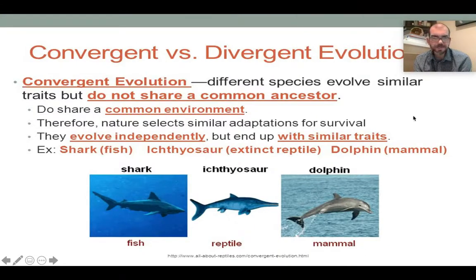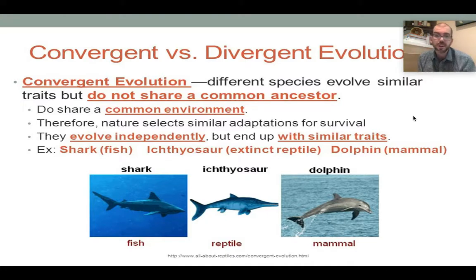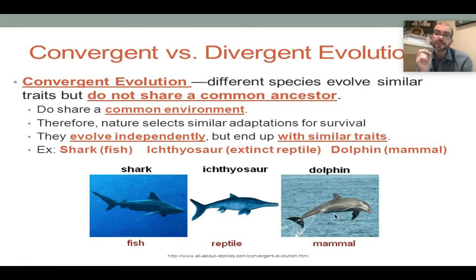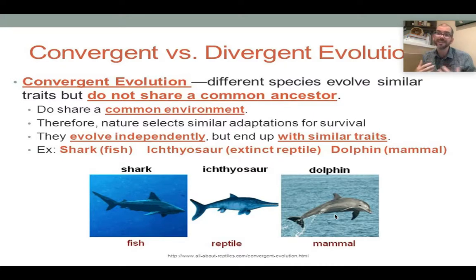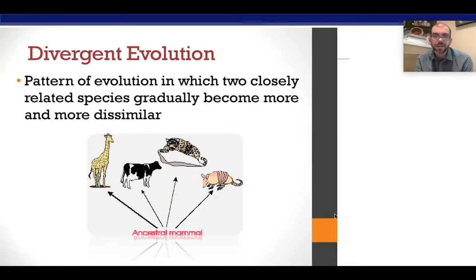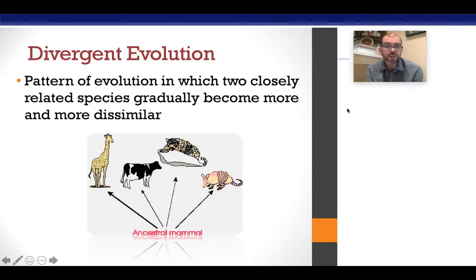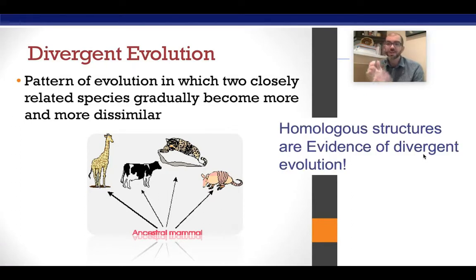Another concept in evolution is convergent versus divergent evolution. Convergent evolution happens when organisms of completely different types evolve similar structures. For example, a shark (a fish), a reptile, and a dolphin are completely different — mammal, reptile, fish — but they all have a very similar body type with fins in the same locations. They've all converged on a similar body plan without sharing a common ancestor. This causes analogous structures — fins are placed that way because it's the most aerodynamic way to move through water. Divergent evolution, by contrast, occurs when two closely related species gradually become different — these are homologous structures, organisms that share a common ancestor but diverge over time.